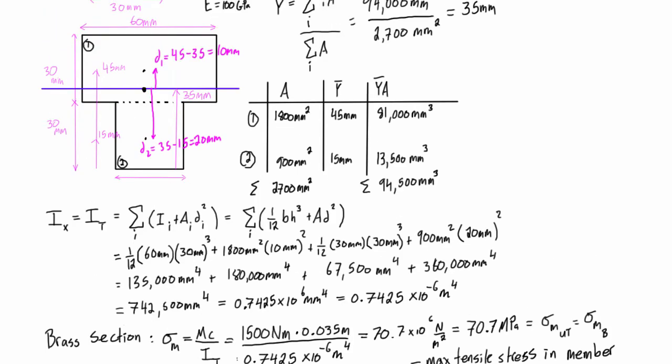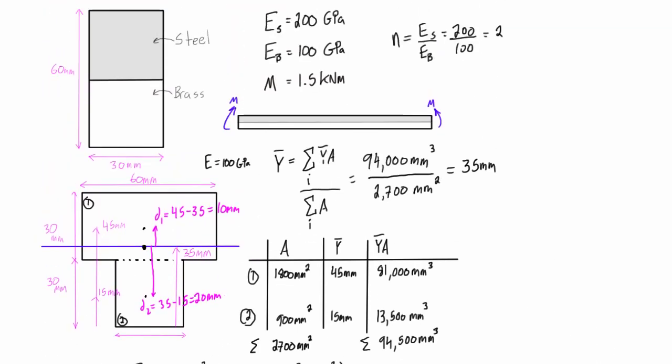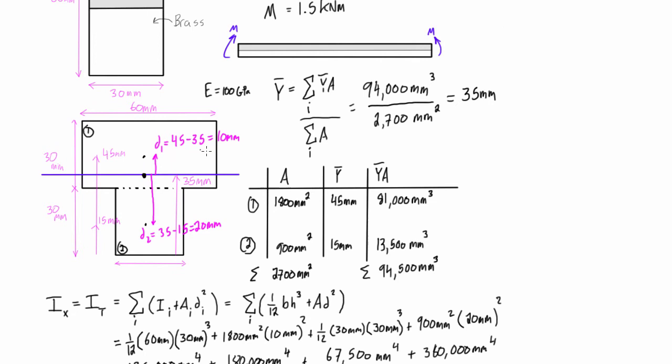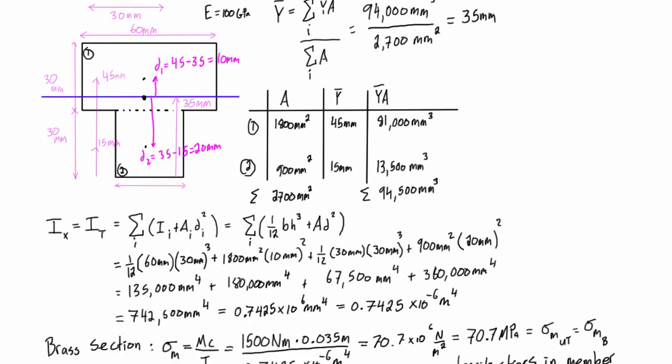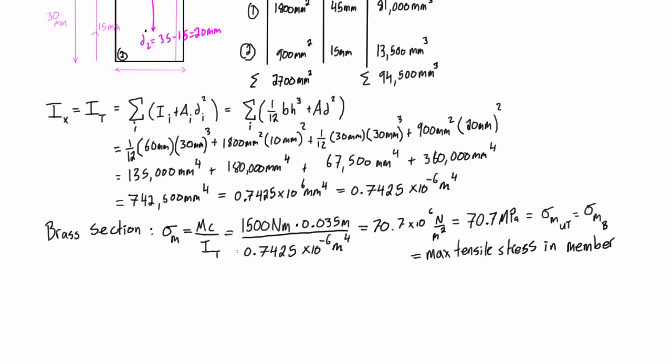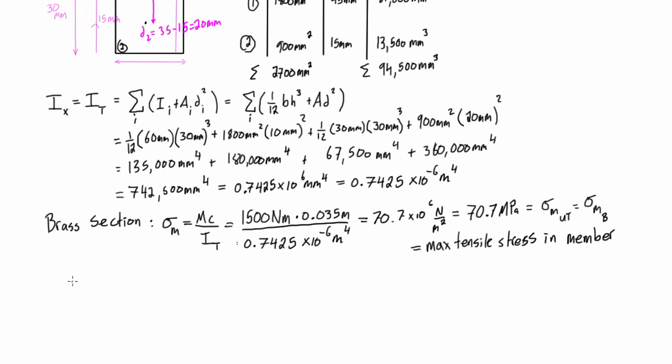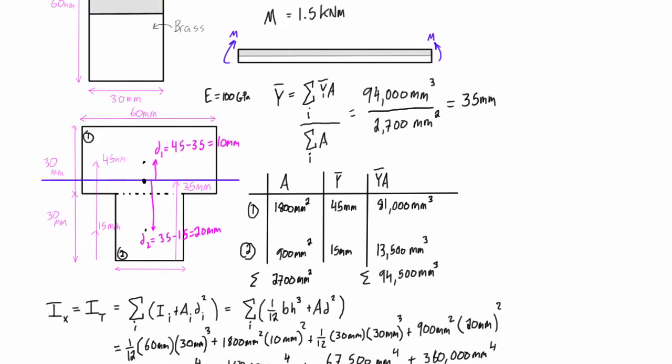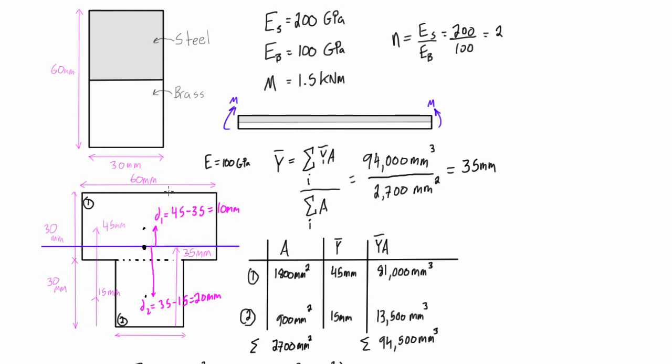Now, for this steel section, we want to find out, well, we were looking for the max compressive stress, so that will be up here at the top, and it will be in the steel section. And when we're dealing in this transformed section, that's going to change a little bit how we solve it, but let's just plug in the values that we have. And this 0.25 meters here is the distance from the neutral axis up to here. It is basically it's 60 minus 35, and that gives us that 25 millimeters, which is 0.025 meters.